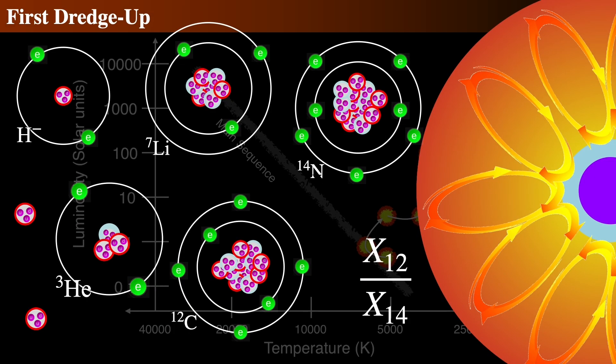Getting back to the exterior view of our star, as the star climbs the red giant branch, the convection zone continues to deepen. As we saw a bit ago, the base of this convection eventually reaches down into the regions where the chemical composition has been modified by nuclear processes.